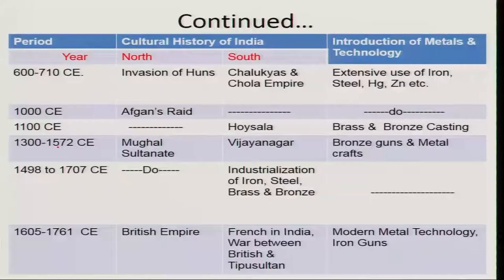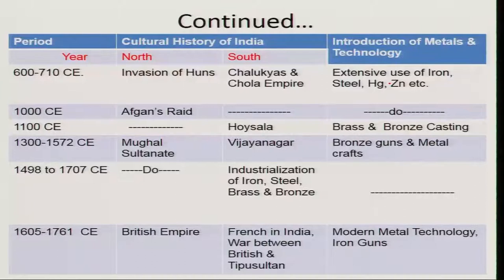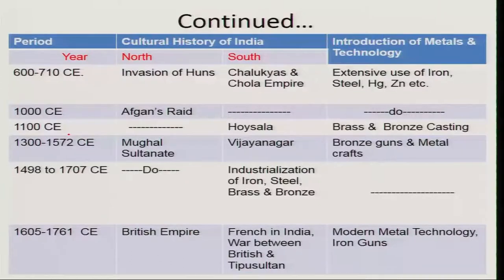From 600 to 700 CE, the northern portion was invaded by Huns and the southern portion had the Chalukyas and Chola empire. There was extensive use of iron, steel, mercury, and zinc, apart from copper, gold, and silver. The northern part was subjected to Afghan raids and a lot was lost in the process, but the southern side was not affected and lot of metal works continued there. By 1100 CE, the Hoysala empire was prominent, and brass and bronze casting was profusely used in the southern part of India.